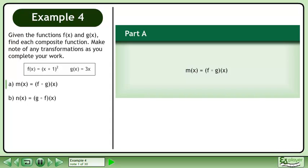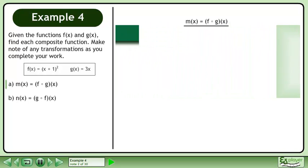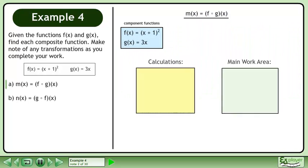In part a, we'll derive m = f of g. Set up the workspace. We write f using regular function notation. Replace g with 3x.